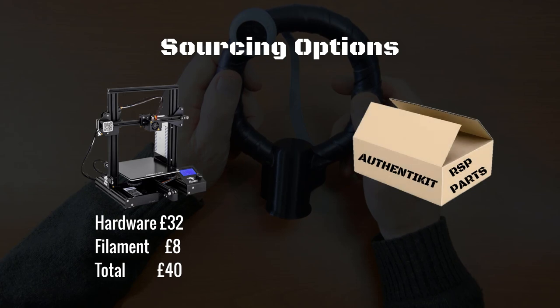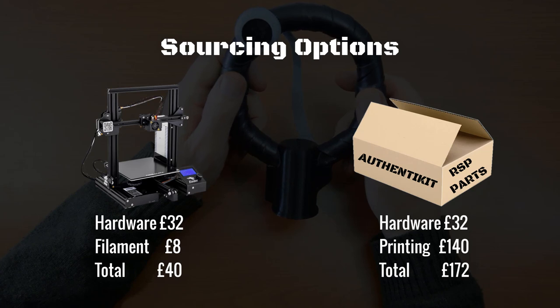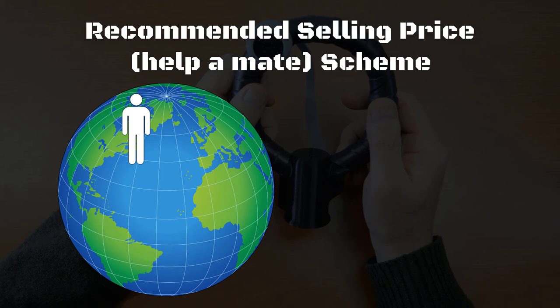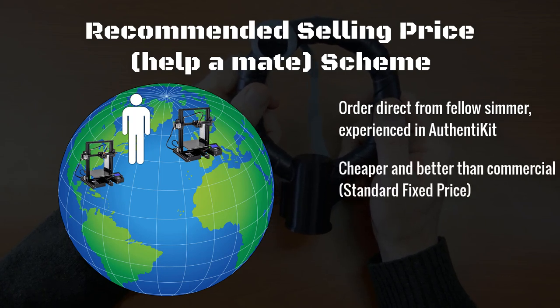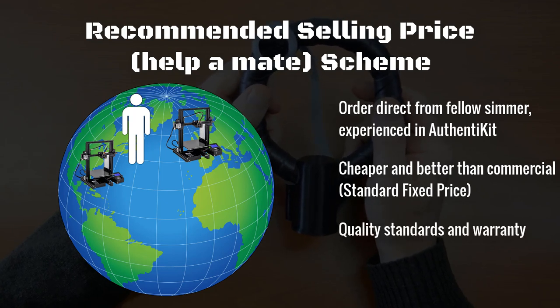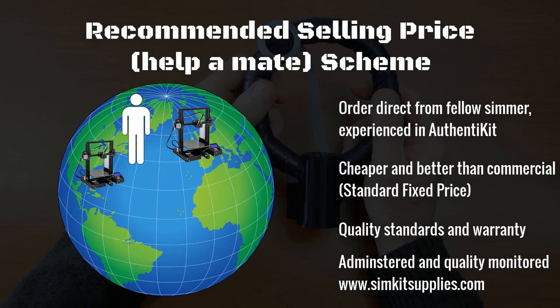If you want to buy a kit, Authentikit doesn't sell anything, but we do have a fantastic scheme called the Recommended Selling Price Scheme, or the Helper Mate Scheme. Essentially there are simmers around the world who've built Authentikit parts and are willing to print for you at prices that are much better, actually, than commercial 3D printing. So basically, wherever you are in the world, we can match you up with a fellow simmer who has built their own Authentikit controls, and they've set up their printers just right for the best results. And they can print these parts for you at prices that are much cheaper than commercial printing, and in fact, they're better than commercial printing, because they've calibrated them for printing Authentikit parts.